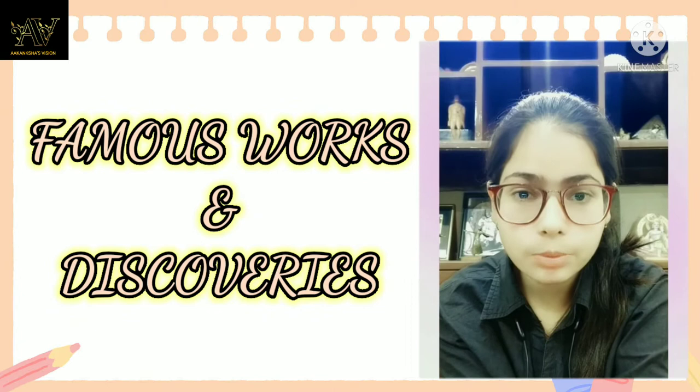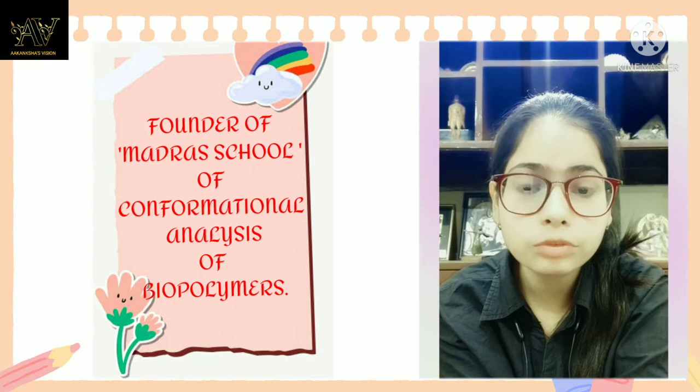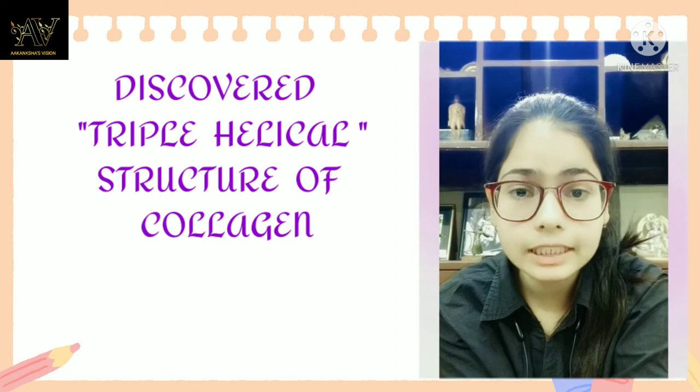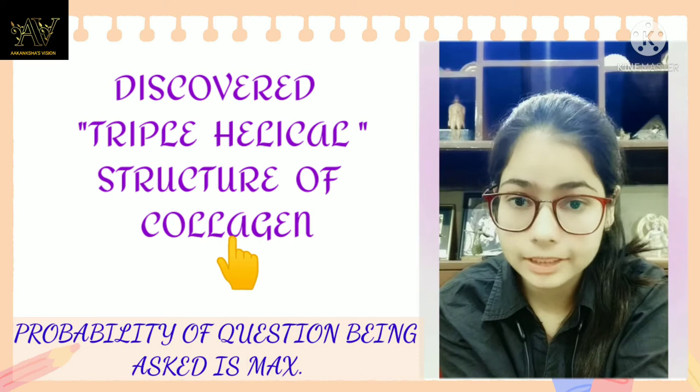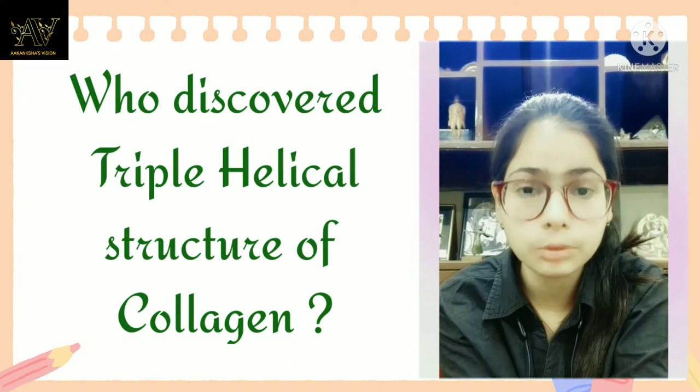Let's start with the famous works done by G.N. Ramachandran. Firstly, he was the founder of the Madras School of Conformational Analysis of Biopolymers. Secondly, he discovered the triple helical structure of collagen. The question of who discovered the triple helical structure of collagen is likely to appear in exams, and the answer is G.N. Ramachandran.